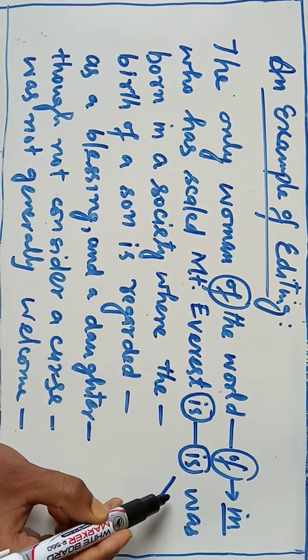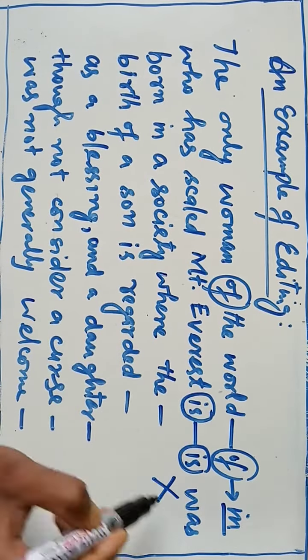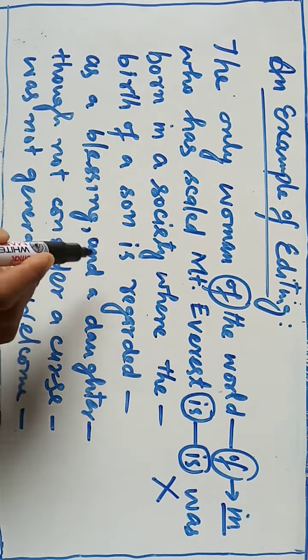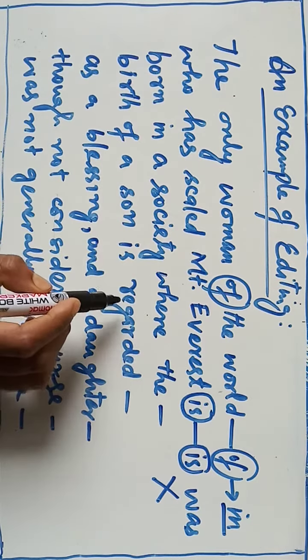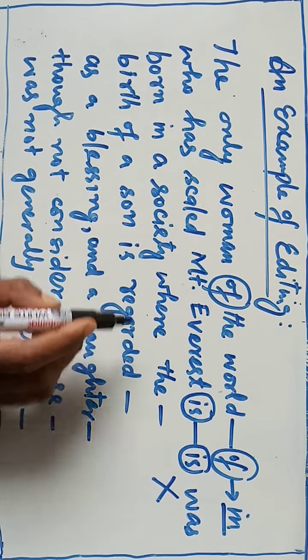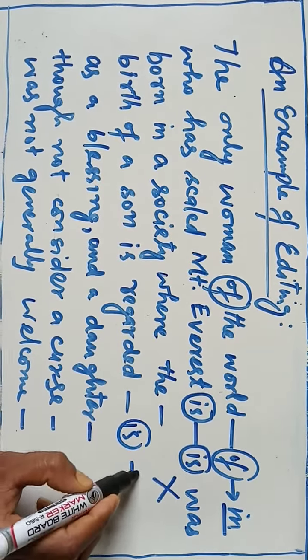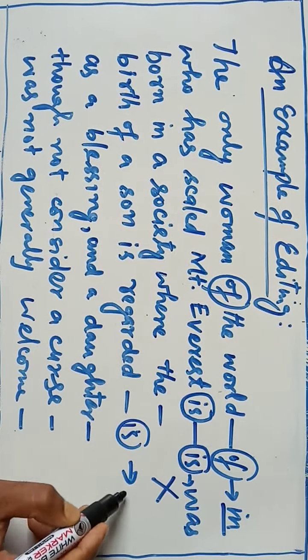Reading ke zarurat hai, we will strike cross. Birth of a son is regarded - past ki baat hai. Again yahan pe jo 'is' hai is ko hum replace karenge, so 'is' is incorrect, is ko replace karenge hum 'was' se.